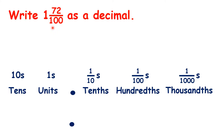Here we have the mixed number 1 and 72 hundredths, and we need to write this number as a decimal. If we remember our decimal place values, we know that after the decimal point we have tenths, then hundredths, and then thousandths.